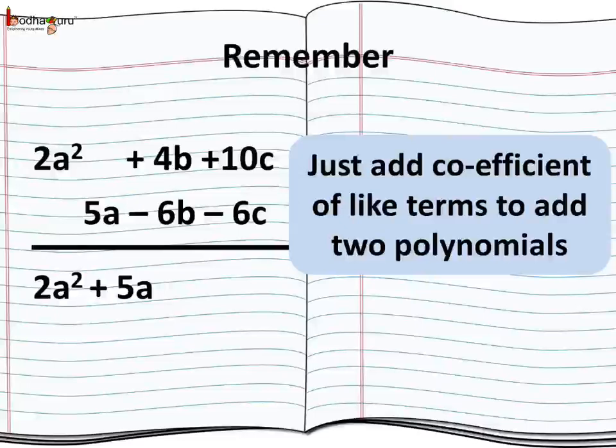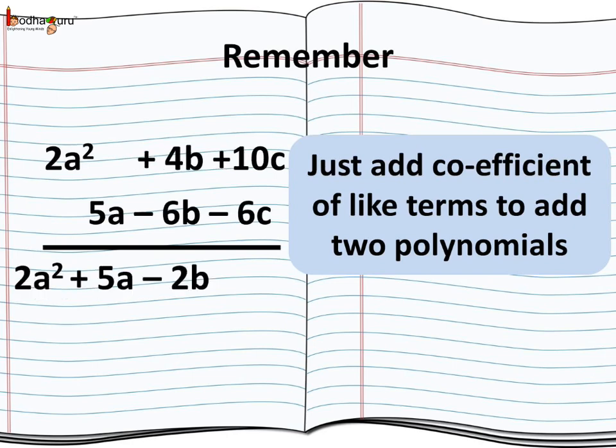Now 4b will be added to minus 6b. 4 added to minus 6. 6 has a greater absolute value. So the sign would be minus. And the answer would be 6 minus 4 which is equal to 2. Putting in the negative sign, so minus 2b. Thus we get minus 2b. Next, 10c added to minus 6c. It would be 10 minus 6 is 4. So 4c. So we get the answer as 2a² + 5a - 2b + 4c.